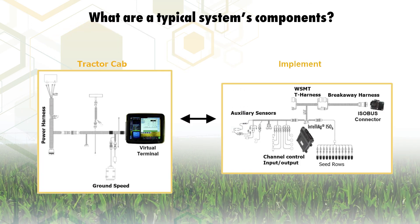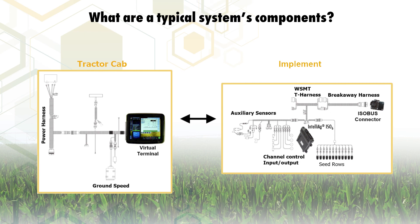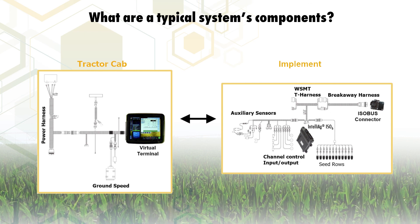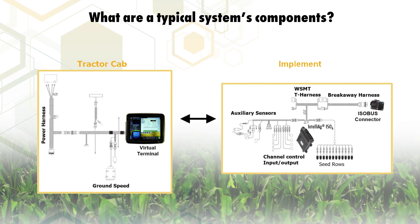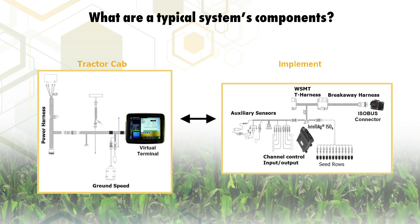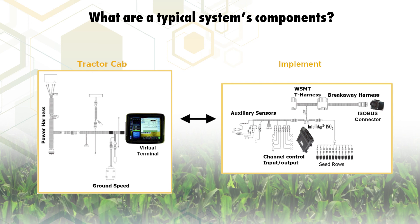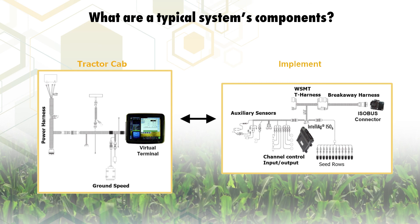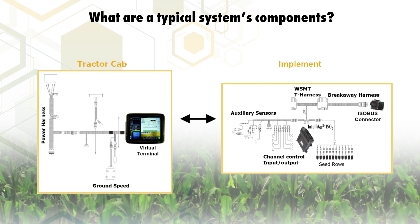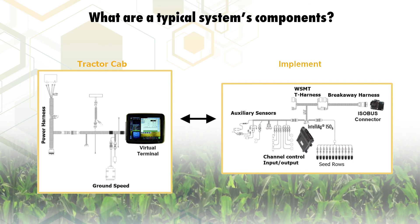From here, the breakaway harness connects to the working set master T-harness, that then connects to the ISO 6 master module and additional modules as configured. Off of the master or accessory harnesses, actuator harnesses and/or specific harnesses such as the planter harness connect to allow the reading of inputs and carry the message for activating outputs.